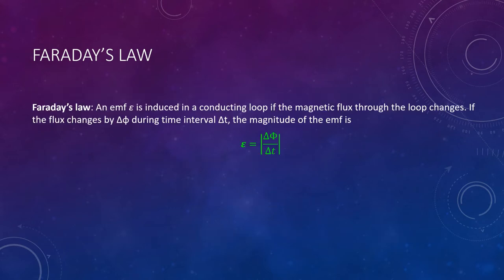This brings us to our definition of Faraday's Law. An emf is induced in a conducting loop if the magnetic flux through the loop is changing. If that flux is changing by delta phi over some time interval delta t, the emf is given by delta phi over delta t. In other words, this is the rate of change of the flux, and emf is measured in volts.